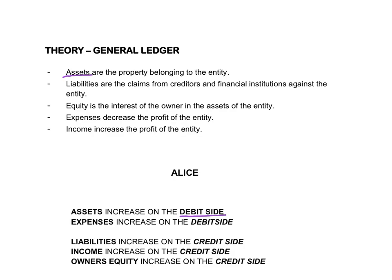Liabilities are claims from creditors or financial institutions that you owe money to — for instance, a loan or a mortgage loan. A liability is money that you owe to other people, which you have to pay in the future, and that will lead to an outflow of money. So assets in the future will lead to an inflow of money, and liabilities in the future will lead to an outflow of money.